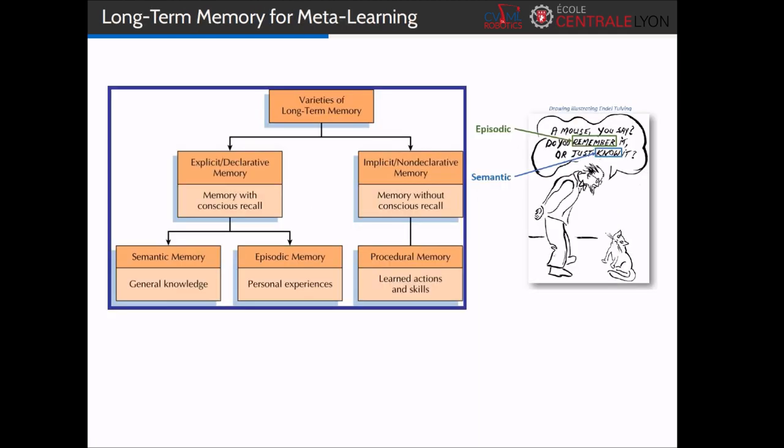Human long-term memory is split into three memories. The semantic, storing general knowledge and facts about the world. The episodic, where you can find your personal experiences, events that you can recall and replay specifically. And then the procedural, responsible for storing skills. The drawing on the right provides an example. Remembering an encounter with a mouse will be a specific event, taken from the episodic memory, whereas knowing what a mouse is and looks like would come from the semantic memory.